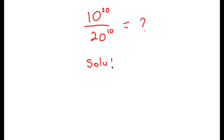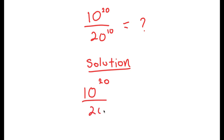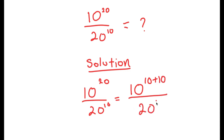For my solution, I'm first going to rewrite this as 10 to the power of 10 to the power of 20 over 20 to the power of 10, and then rewrite the exponent 20 as 10 plus 10, giving me 10 to the power of 10 plus 10 over 20 to the power of 10.